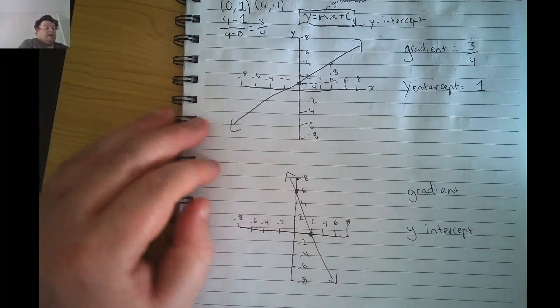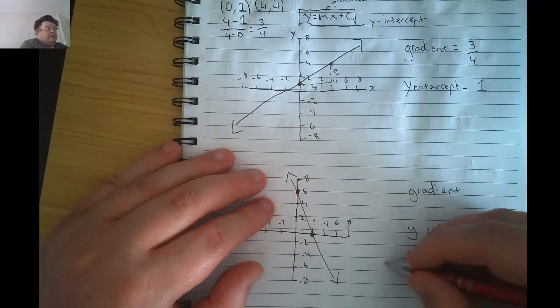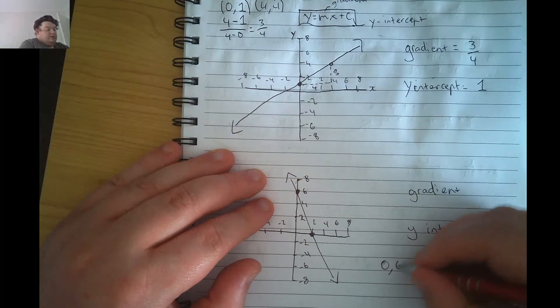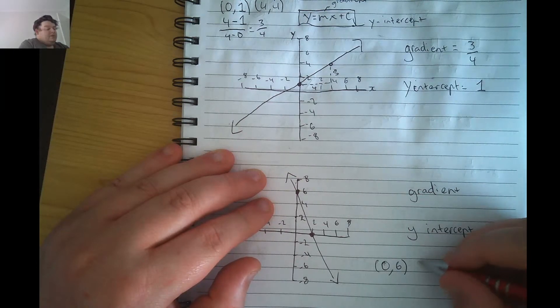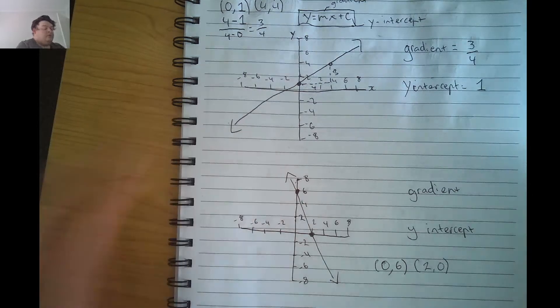This one's a bit different. So again, we'll do gradient both ways and we'll have a look. So the points that we have here, we have 0, 6, and 2, 0.